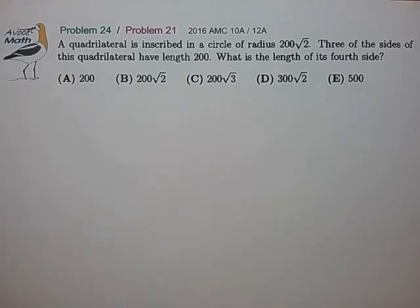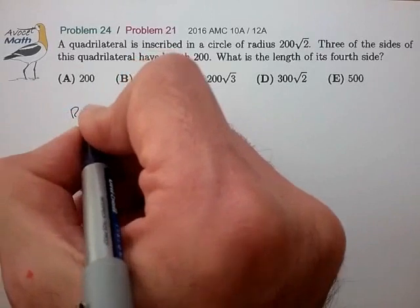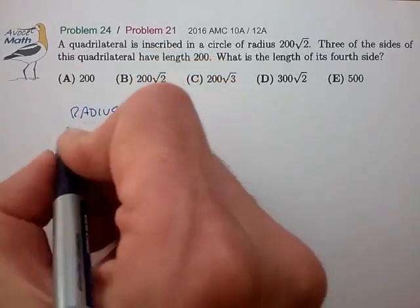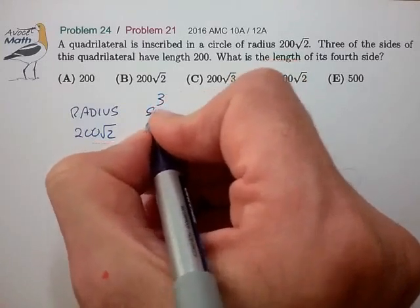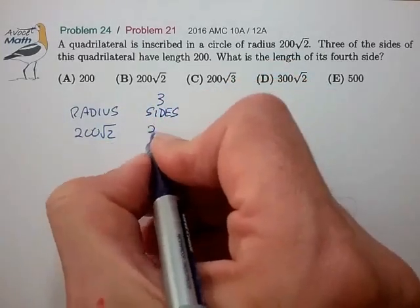So the first step in doing a drawn solution is to decide on a suitable scale factor. So we have the radius of our circle and we have the three sides of our quadrilateral.